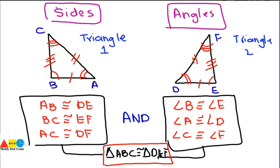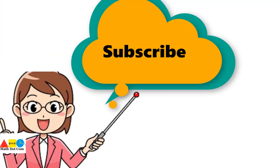In our next section, we will see how you can determine if two triangles are congruent by checking just two sides and angles, or two angles and a side. There are different postulates we will use to identify whether two triangles are congruent. For now, you have the basic concept of congruency. Thank you for watching — please subscribe to our channel math.com for more updates.